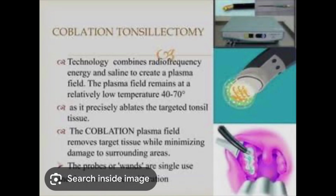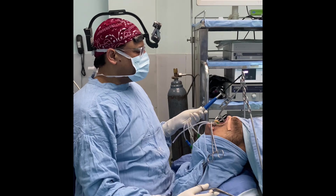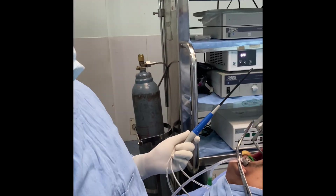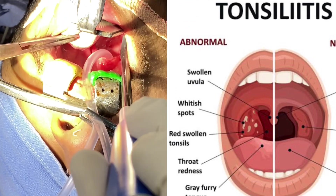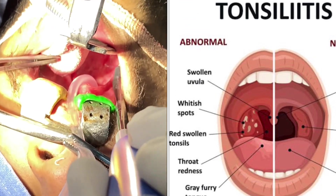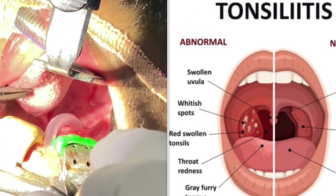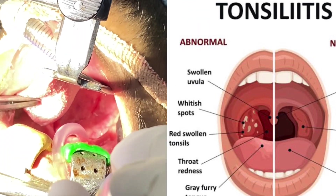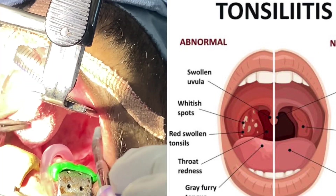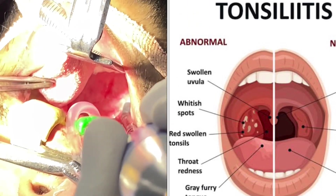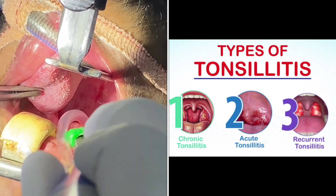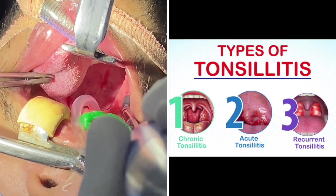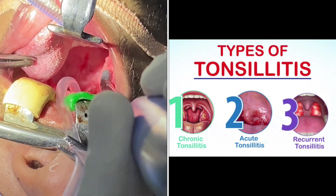We will be using bipolar coagulation to do our tonsillectomy, at a setting of 7 and 3. We are seeing enlarged palatine tonsils with very prominent crypts. When we are pressing the crypts, we can see some smaller stones coming out with some purulent discharge and crypt debris. This is a picture of chronic recurring tonsillitis.